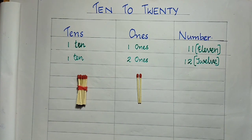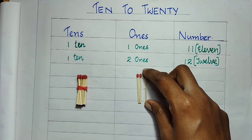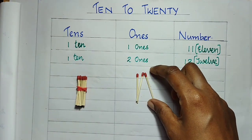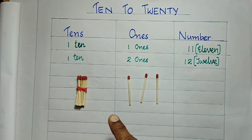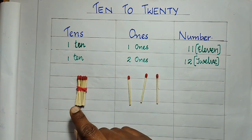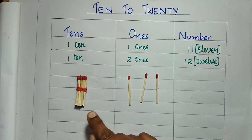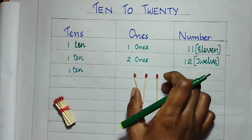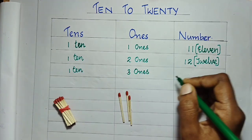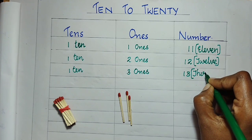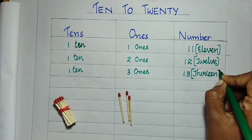Here we are having 12 math sticks. I am taking one more math stick and keeping it here. Then, a bundle of 10 math sticks and 3 more math sticks. 10 plus 3 — this is 10, then 11, 12, 13. So, 10 plus 3 is 13. 1 ten and 3 ones is 13. Very good. How to write this in words? T-H-I-R-T-E-E-N. 13.